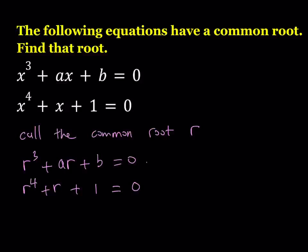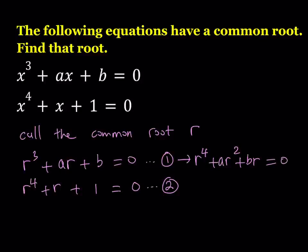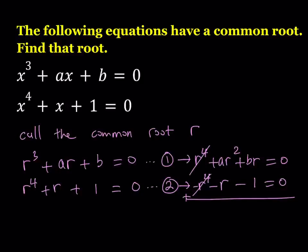I'm going to call this equation number one and this equation number two. Here's what I'm going to do: I'm going to take equation number one and multiply that by R. That's going to become R to the fourth power plus AR squared plus BR equals zero. And the second equation I'm going to multiply by negative one, and that's going to become negative R to the fourth power minus R minus one equals zero. And now we're going to add these two equations — we're subtracting the second equation from the first one after multiplying the first one by R.